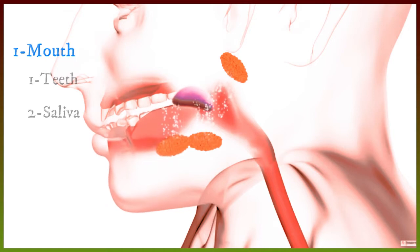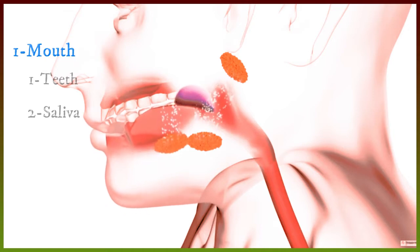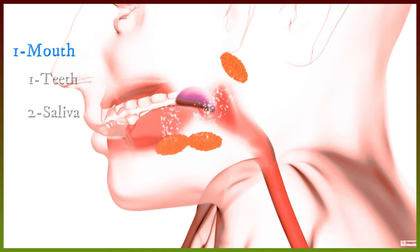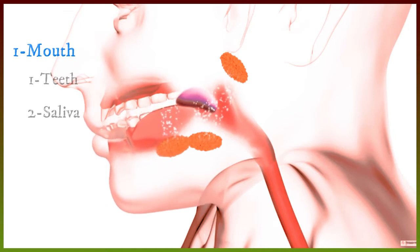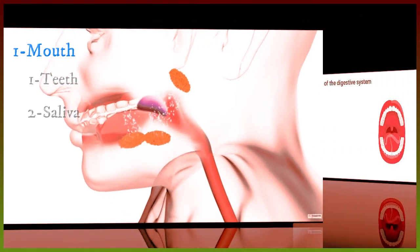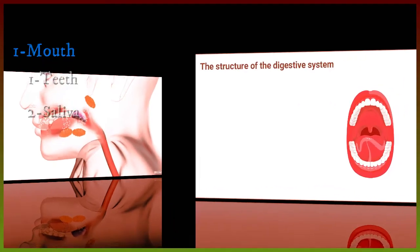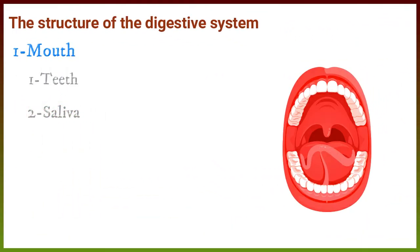Saliva digests starch and changes it into sugar. Starchy foods include potatoes, bread, rice, and pasta. Saliva also facilitates the swallowing of food. Three — the tongue, which mixes food with saliva in the mouth.